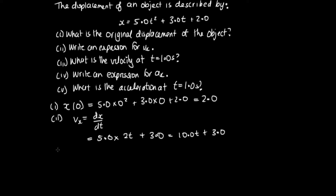Part 3 asks: what is the velocity at 1 second? We evaluate v_x(1) by substituting t = 1 wherever we see t in our expression for v_x. So we get 10 times 1 plus 3, which equals 13.